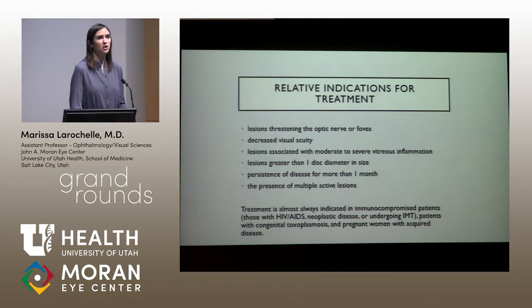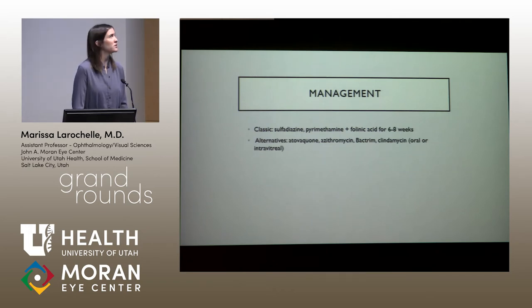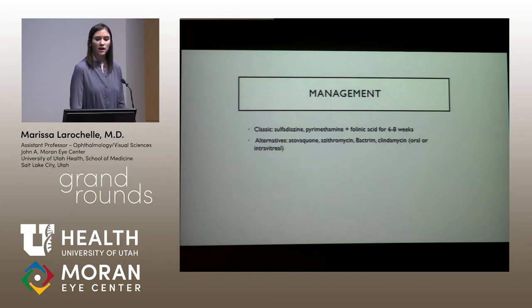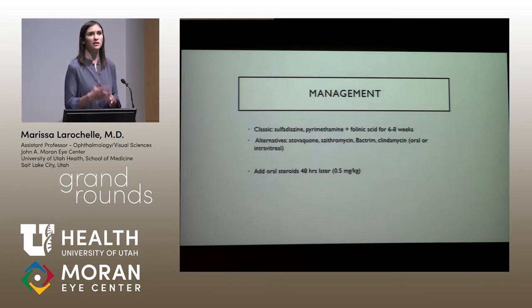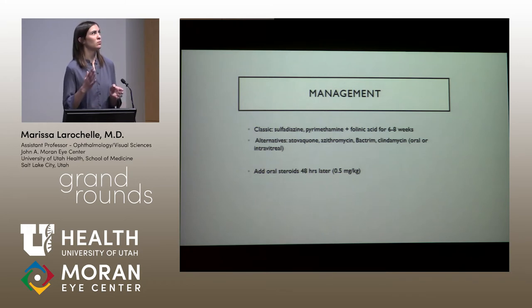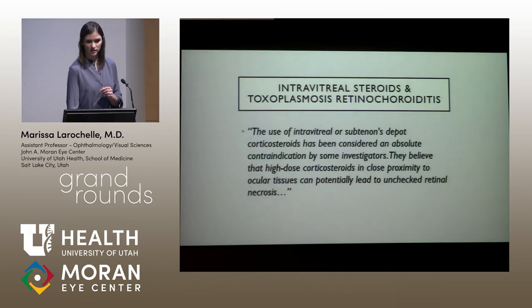Some providers monitor a peripheral, small, asymptomatic lesion; in our department we treat every active lesion. Classic treatment is triple therapy: sulfadiazine, pyrimethamine, and folinic acid — folinic acid given because pyrimethamine causes decreased platelets and white blood cells. Many alternative treatments are described. Oral steroids are added 48 hours after starting antibiotics if there is a significant vitreous inflammatory response. Steroids are not contraindicated in ocular toxoplasmosis, but periocular steroids without antibiotic cover are absolutely contraindicated — this can cause uninhibited retinal necrosis.